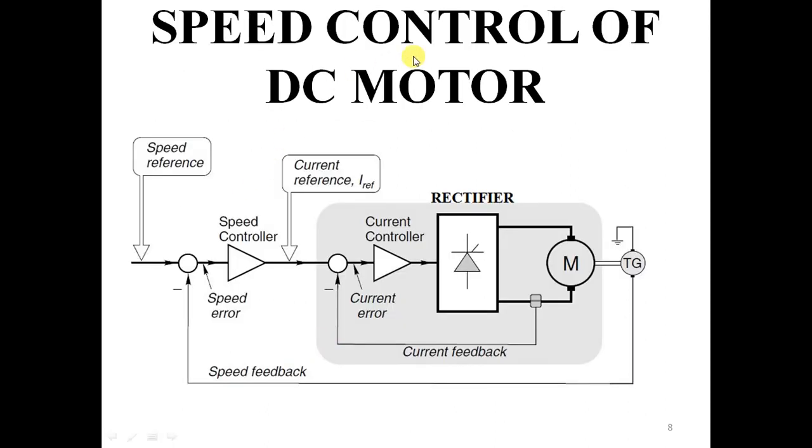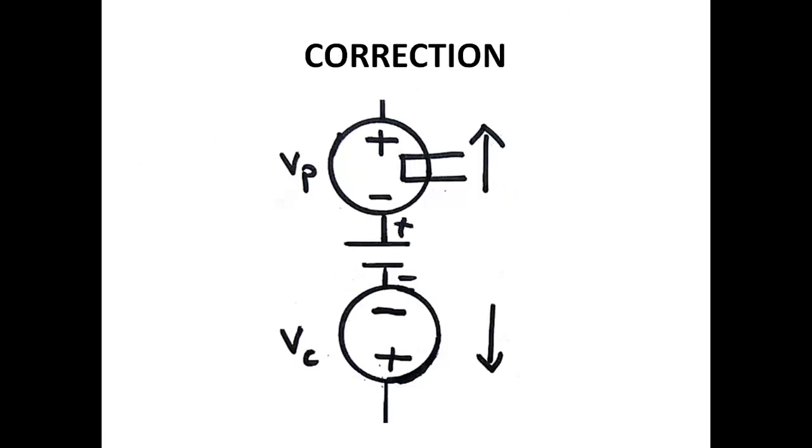This is closed loop control of DC motor. You have a speed loop which maintains actual speed is equal to set speed. You have a current loop which gives protection to the rectifier and motor. Whatever correction you do, that correction must be opposite to the disturbance. If disturbance is applied in this direction, the current must be in the opposite direction.